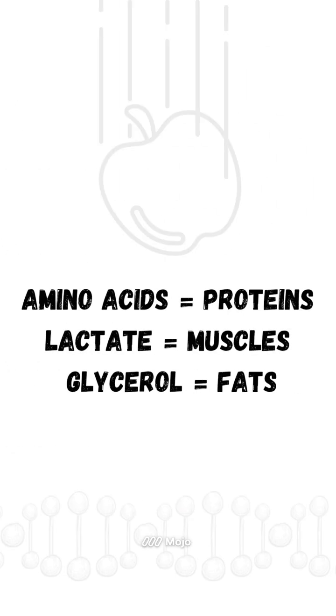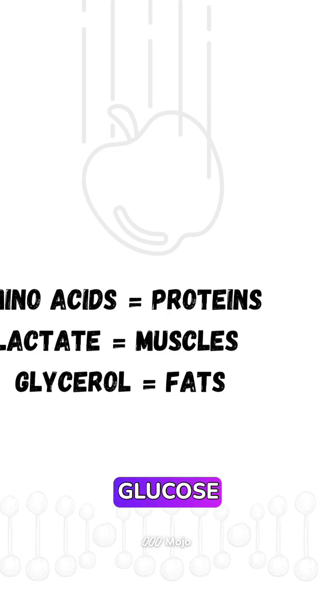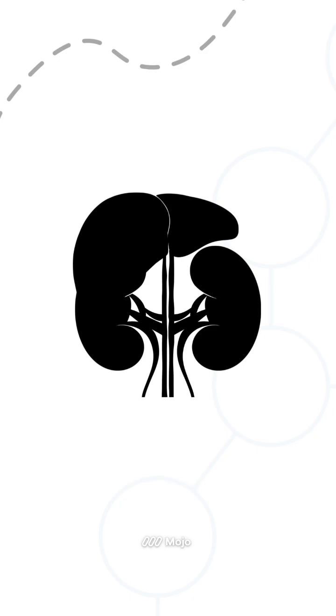Key starting materials. Your body can use amino acids from proteins, lactate from muscles, and glycerol from fats to create glucose. These materials are converted into glucose by the liver and kidneys, mainly.